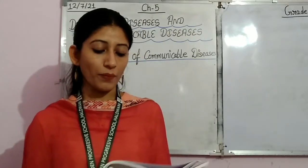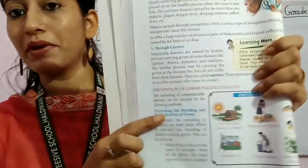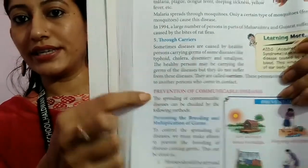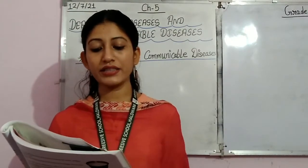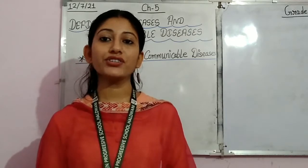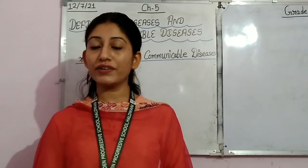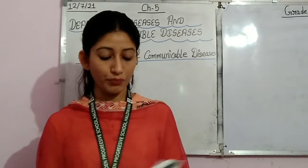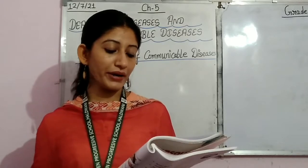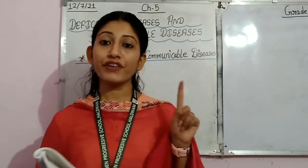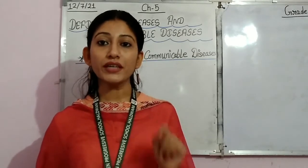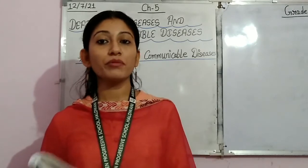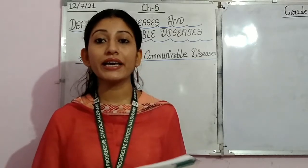As you can see on page number 46, the topic is Prevention of Communicable Diseases. It says the spreading of communicable diseases can be checked by the following methods. The first method is preventing the breeding and multiplication of germs — this is the first step needed to stop the spread of communicable diseases.